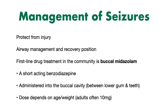The dose depends on age or weight, but in adults it's often 10 mg. Buccal midazolam is often prescribed to patients who have recurrent seizures, and their carers or parents are trained in how to use it. Another drug you may see being used is rectal diazepam — a different form of benzodiazepine that can be administered rectally. Both buccal midazolam and rectal diazepam mean that intravenous access isn't required, which can be very useful in a community setting. Always keep a broad and open mind about the cause of the seizure — don't assume it's due to epilepsy, and consider other possible causes such as a head injury or low blood sugar.